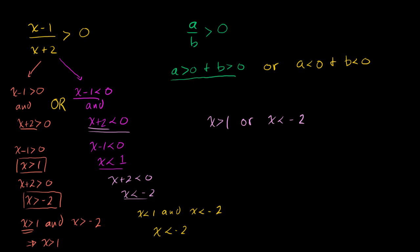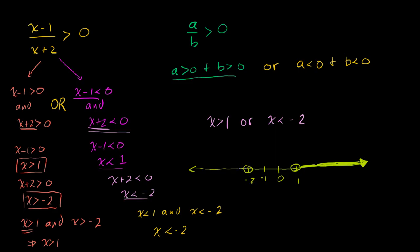So our solution is x greater than 1 or x less than minus 2. On a number line, we have 0, then 1 — x could be greater than 1, not including 1, so we put a little open circle. Everything greater than 1 satisfies this, or anything less than minus 2. Let's verify: x equals minus 3. Minus 3 minus 1 is minus 4, and minus 3 plus 2 is minus 1. Minus 4 divided by minus 1 is positive 4 — so these negative numbers also work.